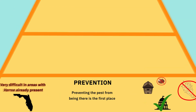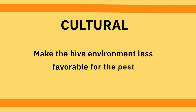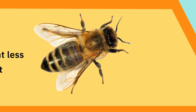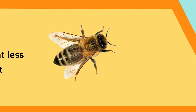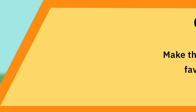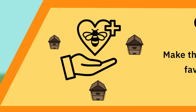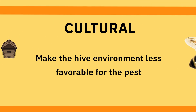Moving up the IPM pyramid, you next find cultural control. In this category you're trying to make the hive environment less favorable for Varroa. Some cultural control measures overlap with prevention measures. For example, the use of hygienic stock — having a genetically resistant or tolerant population in the hive — can help culturally. Also coordinating treatment among colonies and among beekeepers in an area all fall under the cultural control umbrella.